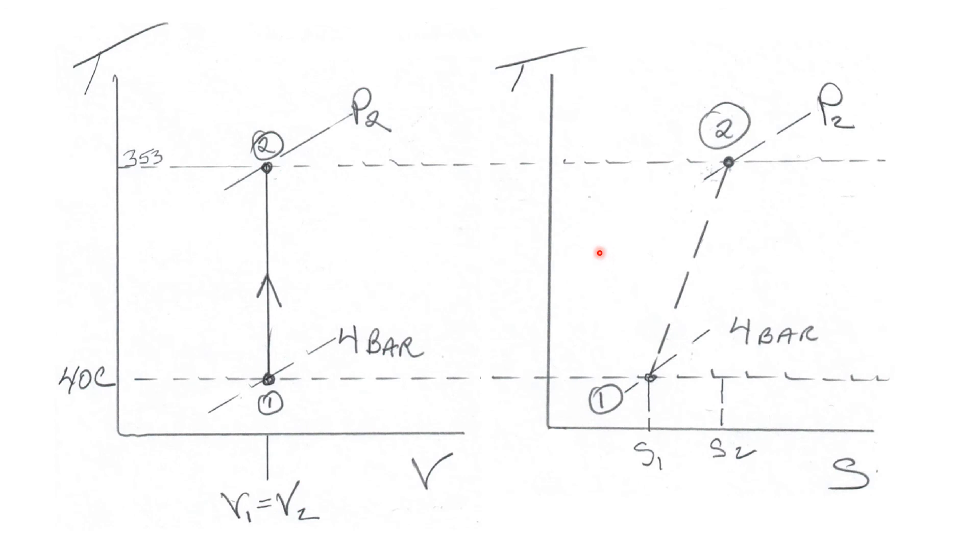Now on a T-S diagram, our initial state is at 40 degrees C. And our final state is at 353 degrees C. The initial state is at 4 bar. The final state has a pressure P2 of 8 bar. But state 2 has a greater specific entropy than state 1. So state 2 is to the right of state 1 on a T-S diagram.